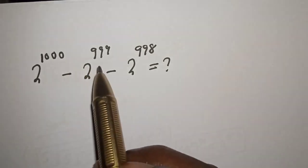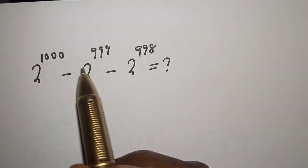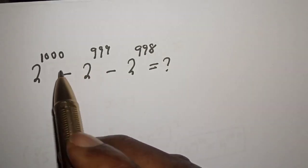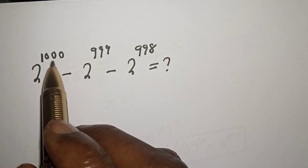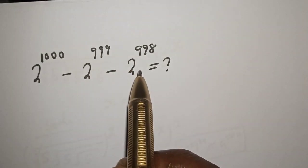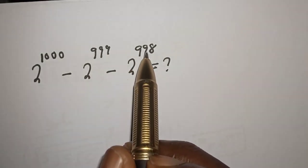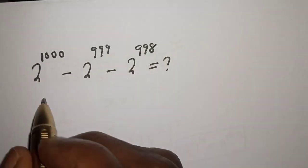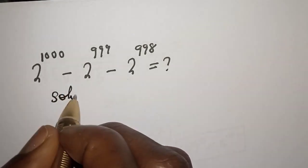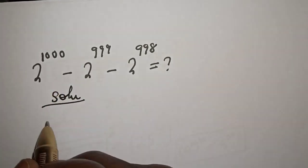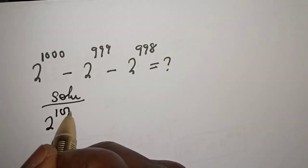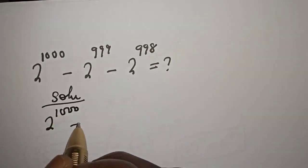Hello, welcome to Madgees. In this class we quickly want to simplify this nice math problem: 2 raised to power 1000 minus 2 raised to power 999 minus 2 raised to power 998.